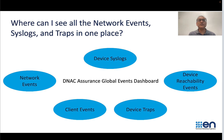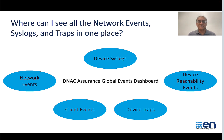In the DNA Assurance Global Events Dashboard, you can see multiple types of events in one place. You will be able to see the device syslogs, the various network events, as well as the reachability events — whether the device is reachable or not — the traps, as well as the wireless and wired client events.